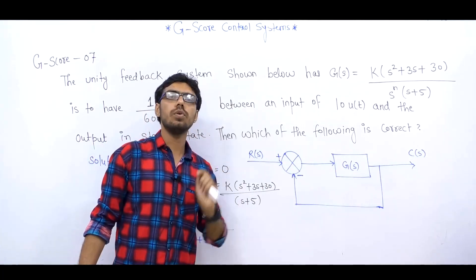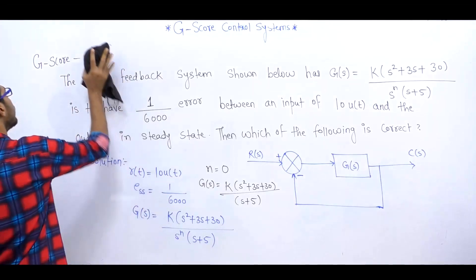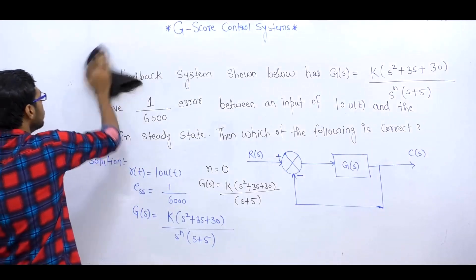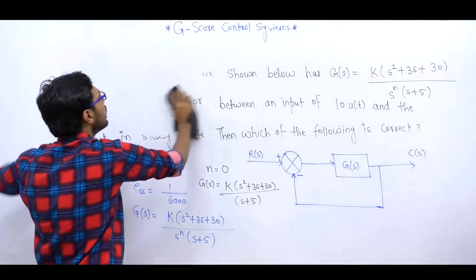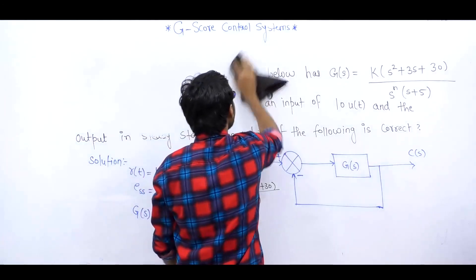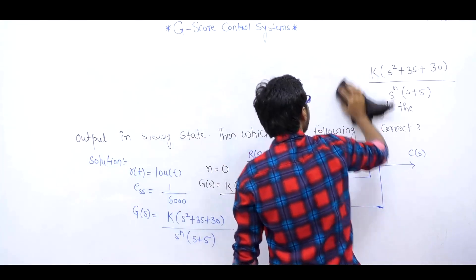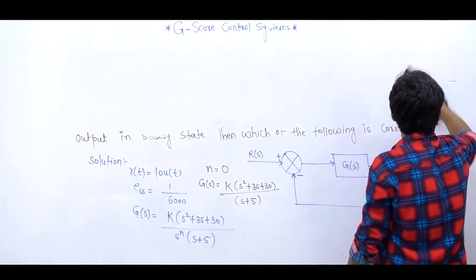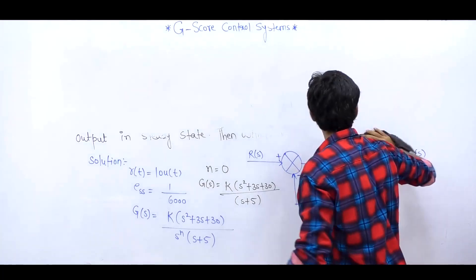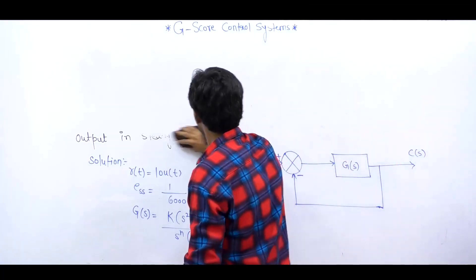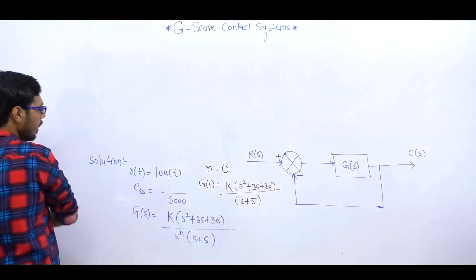FACE के कितने FALSE ORIGIN पे होंगे — यह बात क्लियर है। तो चलो हम SOL करते हैं इसको। अगर मुझे SYSTEM का TYPE DETERMINE करना है तो सबसे पहली CONDITION होगी कि मेरा SYSTEM UNITY FEEDBACK में होना चाहिए। UNITY FEEDBACK में SYSTEM आ गया — उसके बाद G(S) के POLES ORIGIN पे कितने हैं, वही SYSTEM का TYPE होगा।